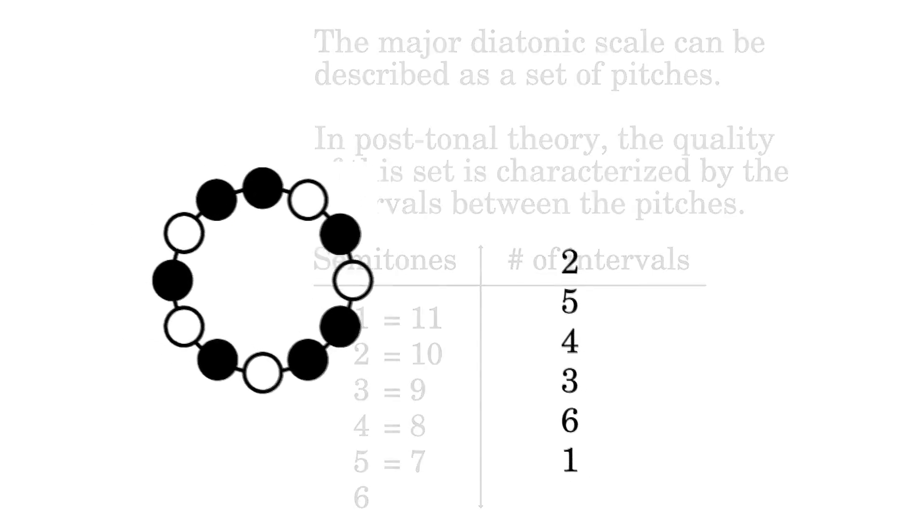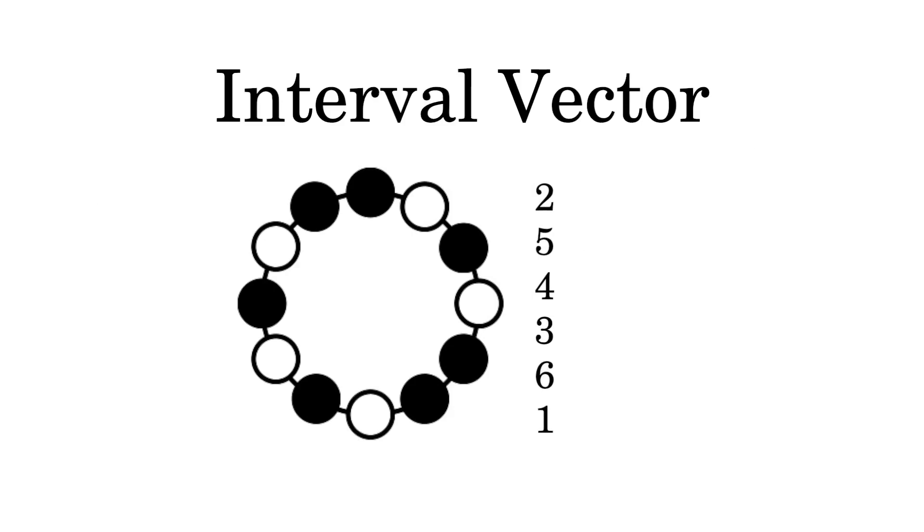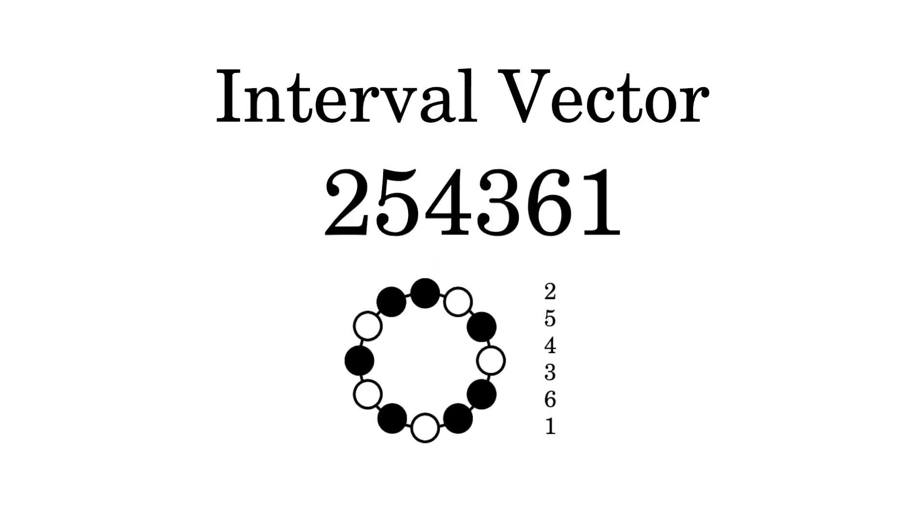These six measurements of the intervals is called the interval vector. It is normally written as a sequence of six integers, like this: two, five, four, three, six, one. Any set of pitches will have an interval vector.